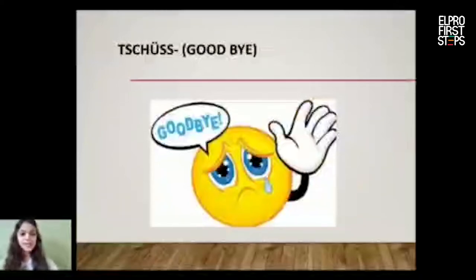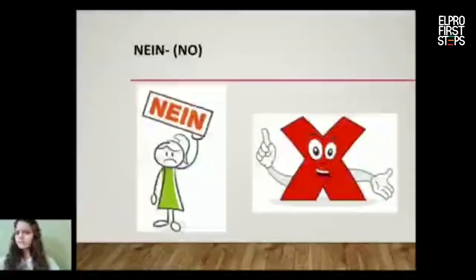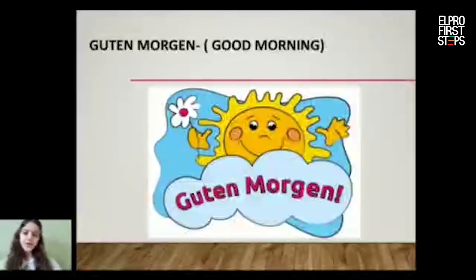And for yes, we will say Ja. For no, we will say Nein. So the green thumb is like yes — Ja — and the red one is Nein. Guten Morgen, guten Morgen.